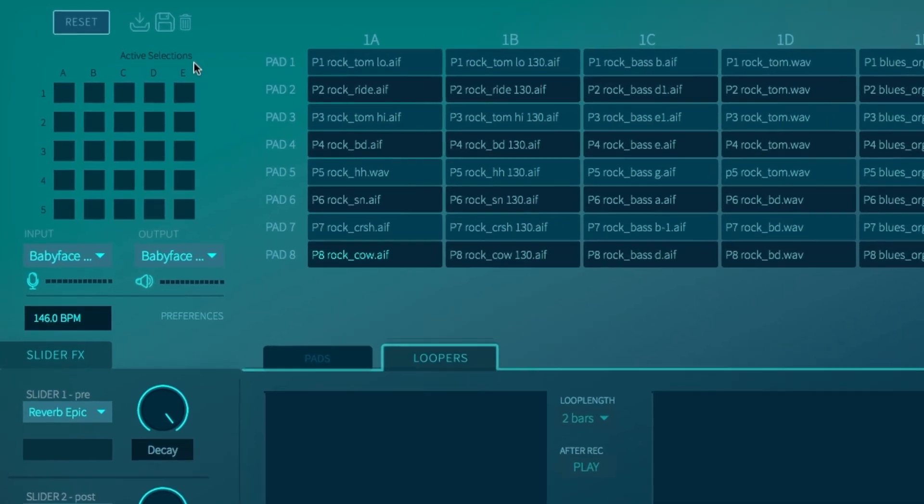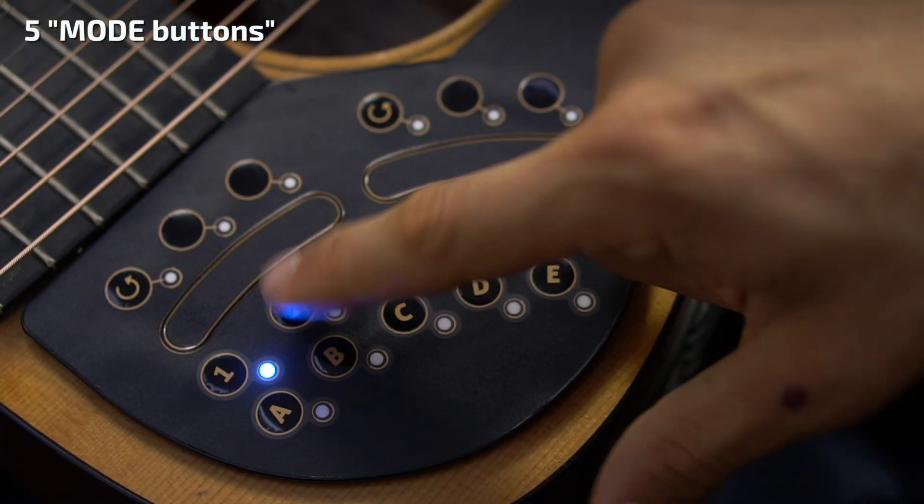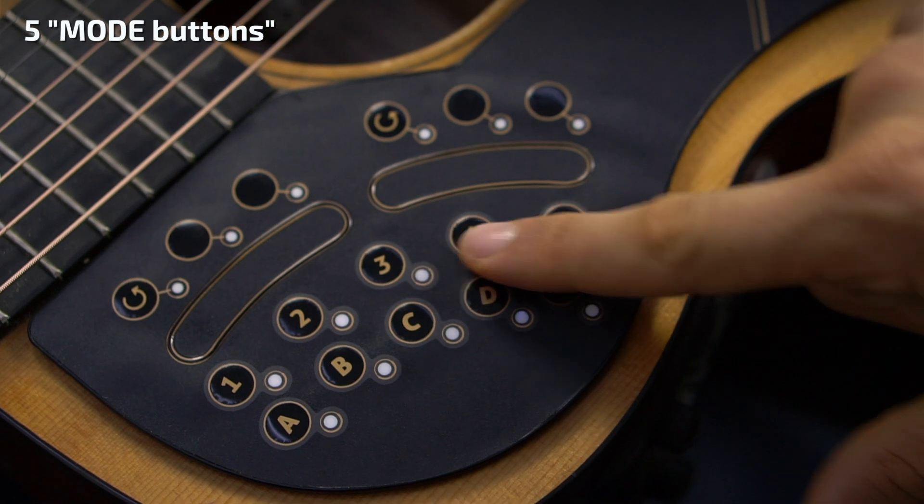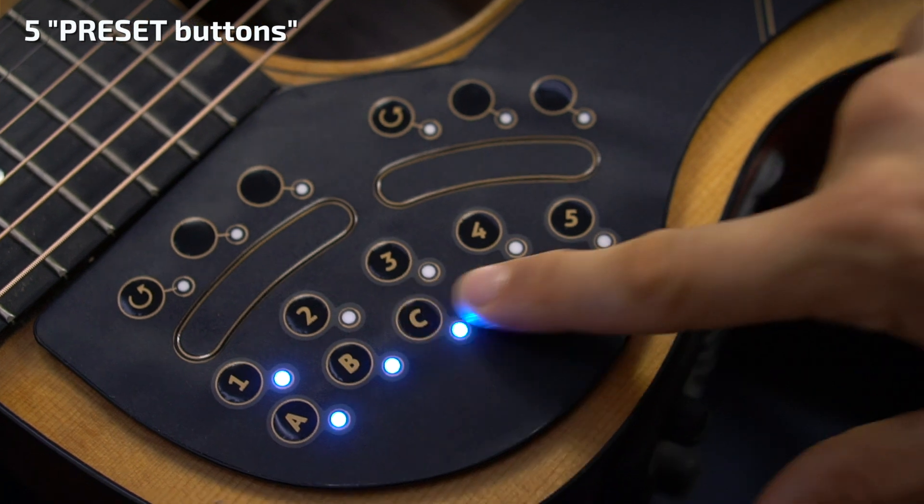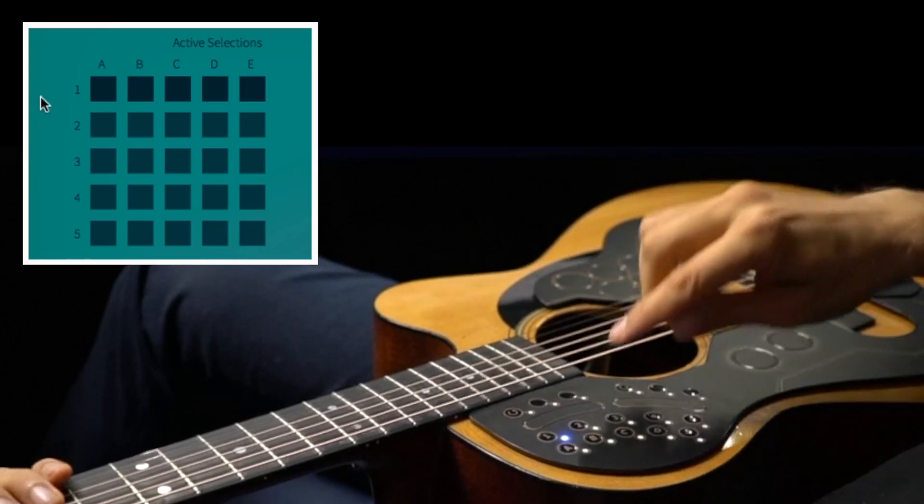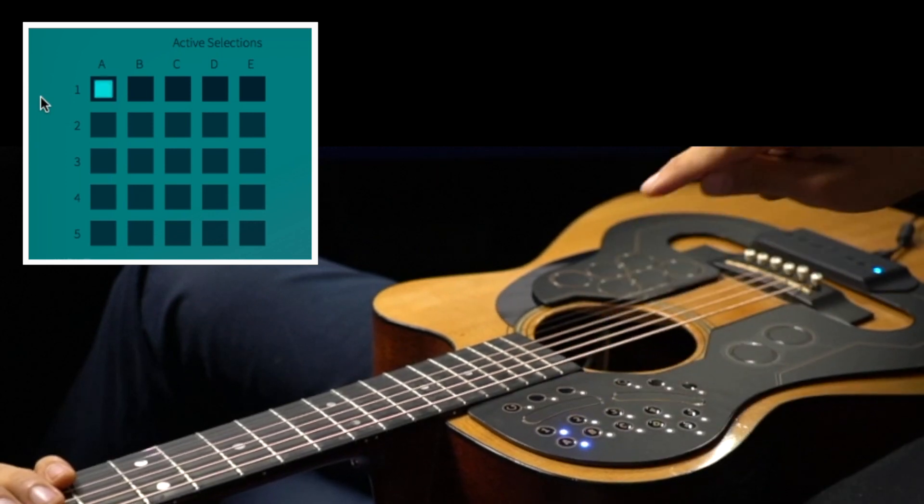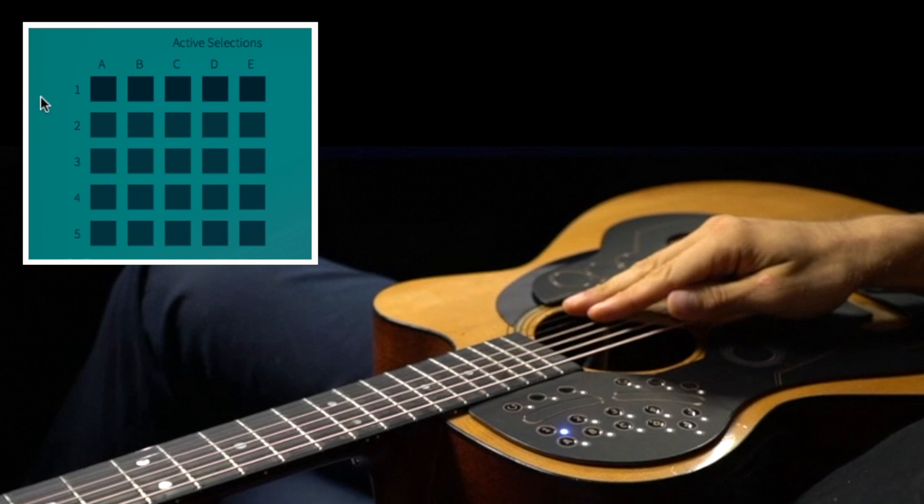On the top left you see what we call the active selection grid. You see that the Agpad has five buttons with numbers. Those are the mode buttons. And in each mode you can select up to five different presets beginning from A to E. If you activate the preset on Agpad it is shown as a solid square at the active selection grid. If you deactivate it it's an empty square.